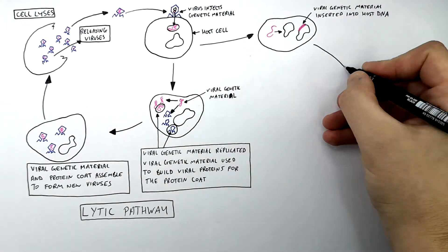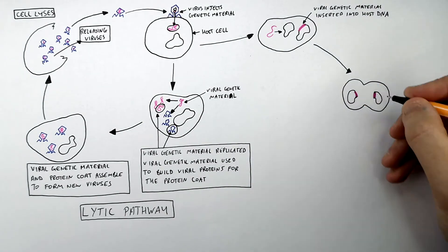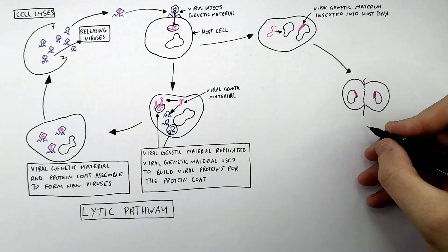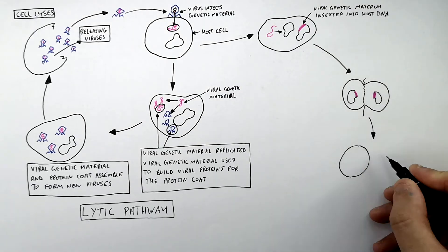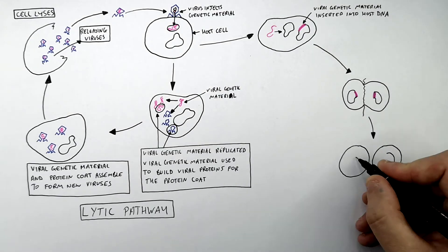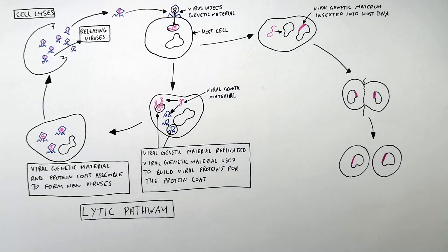The host cell will now just replicate — it will divide and replicate as normal, but with the viral genetic material incorporated in the host's DNA. This can go on for many, many years, though just one round of replication is shown here.